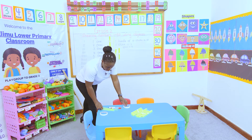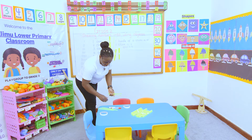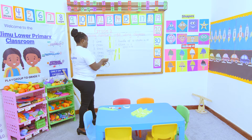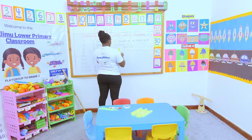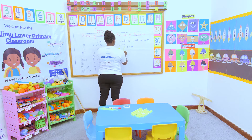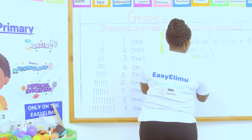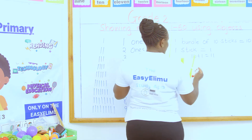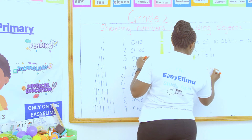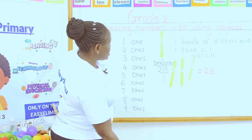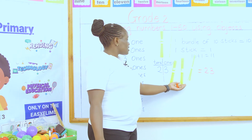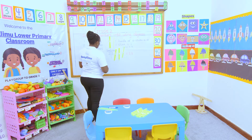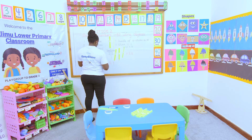How many ones do I have? One, two, three — so two bundles of ten sticks and three ones. What number do they show? They show number 23. This equals 23. I have shown my number 23 using bundles of sticks.